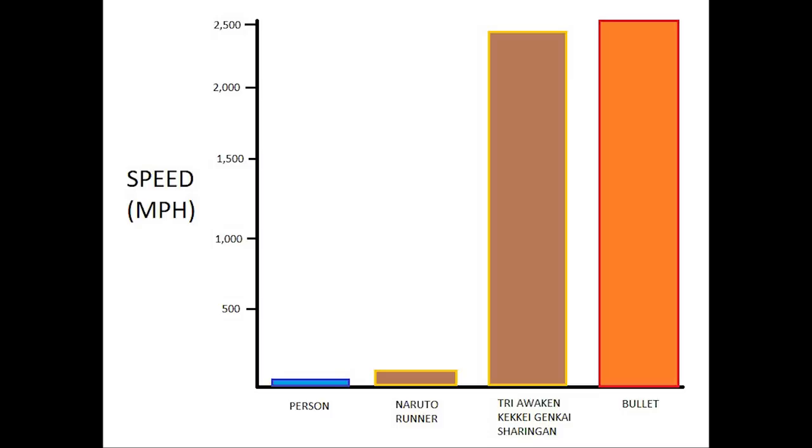Still don't believe us? Let's take a look at some data. The first bar you see here is the speed of an average person, while the last bar is the speed of an average bullet. Pretty tough competition.